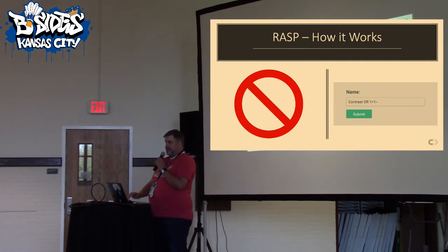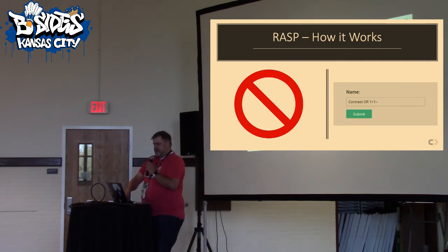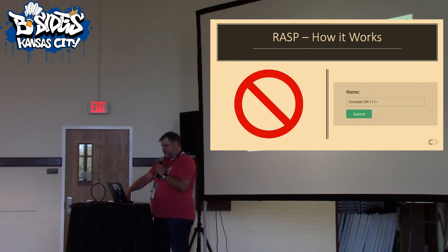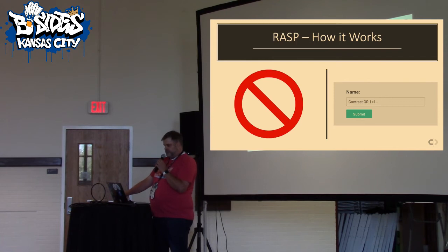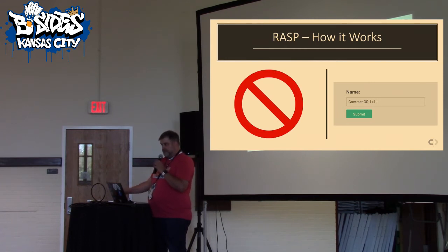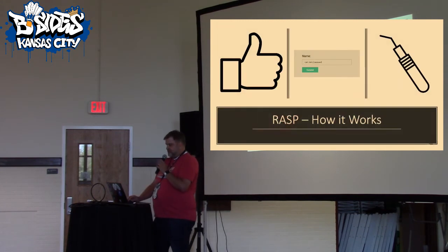How does RASP work differently? Let's go back to the original example. I have a form where I need to submit a name and I submit 'contrast OR 1=1 --'. RASP is going to look at that, key on it, and watch where it ends up. Once it traces it through the app and that data ends up in a SQL query, now RASP says, 'we have a problem here, we need to block it.' There's context. RASP follows the data into a vulnerable sink and says we can't allow this to happen, and blocks it.